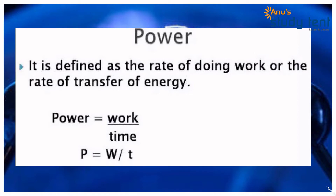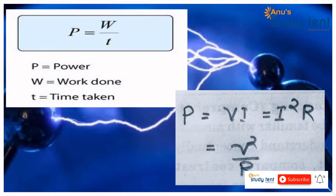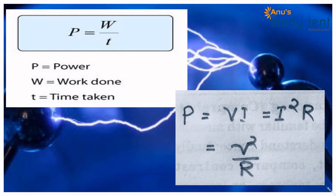Electrical power is the rate of doing work, or the rate of consumption of energy — energy consumed per second. Power P is equal to W by T. We can derive three equations: P is equal to VI, P is equal to I²R, and P is equal to V² divided by R.